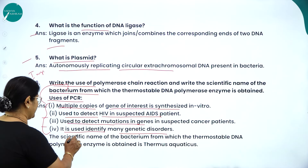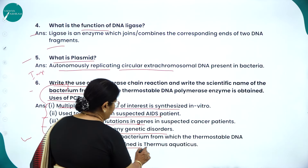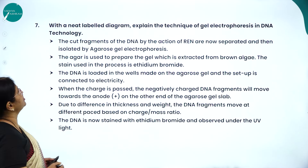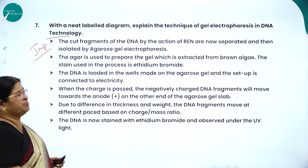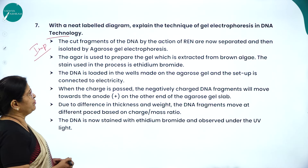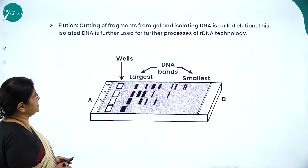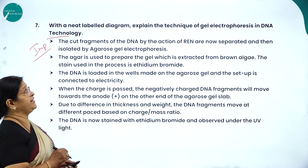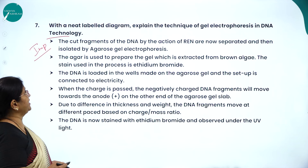The scientific name of the bacterium from which the thermostable polymerase enzyme is obtained is Thermus aquaticus. Now, with a neat labelled diagram, let me explain the technique of gel electrophoresis in DNA technology — this is very important from an examination point of view.